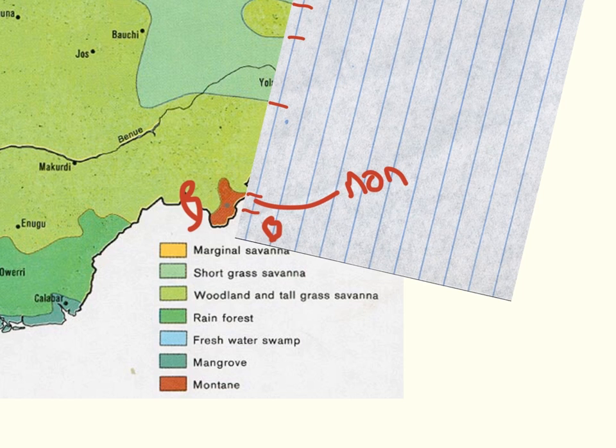Then we have a look and okay, when it stops being montane, it starts becoming woodland and tall grass savannah. Now that's going to take me 45 minutes to write down. So we'll just call it W. So here is W.